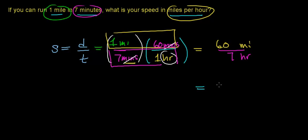And when you divide 60 by seven, you get 8.6 miles per hour.